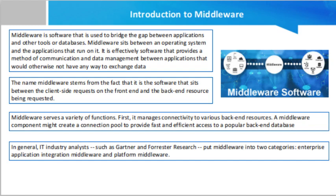Second, middleware software has the capacity to implement logic based on the request made by the client. For example, a middleware component might recognize that a client browser making a given request has the language header set to English, and as a result, the queries it makes to the back end might be tweaked to return only English-based results. Or perhaps a server could identify the geographical location of the client based on its IP address and return data that prioritizes results located close by. The ability to take a request from a user, perform logic, and then customize the results is an important job performed by middleware software.